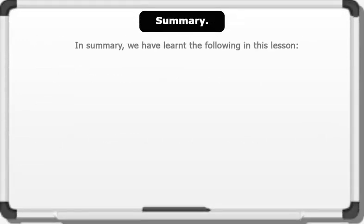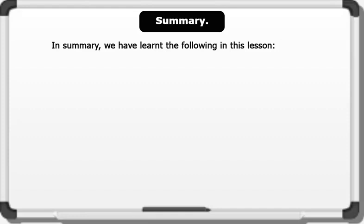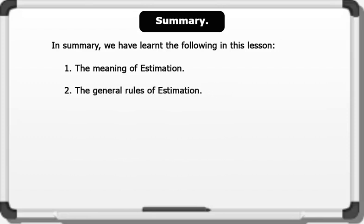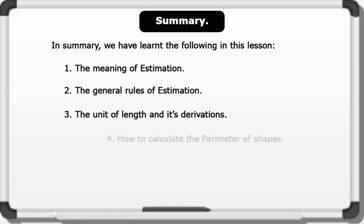In summary, we have learned the following in this lesson: 1. The meaning of estimation. 2. The general rules of estimation. 3. The unit of length and its derivations. And 4. How to calculate the perimeter of shapes.